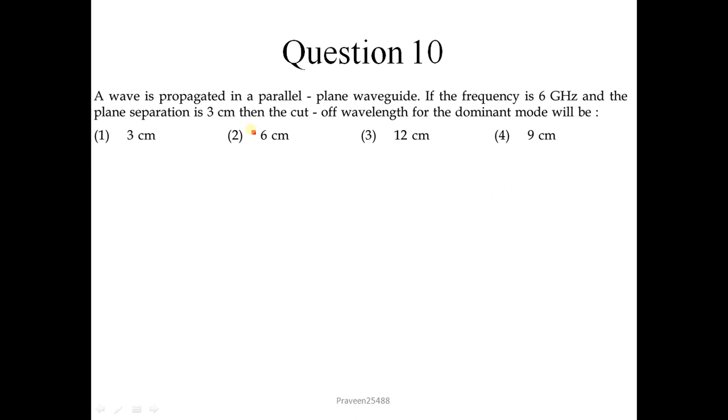Question number 10: A wave is propagated in a parallel plane waveguide. If the frequency is 6 gigahertz and the plane separation is 3 cm then the cutoff wavelength for the dominant mode will be. Wavelength lambda is given as 2a upon m, where m equals 1 and a is 3 cm. So our answer is 3 into 2 which is 6 cm.